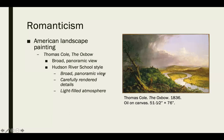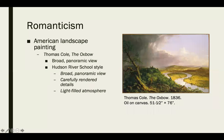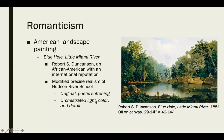Cole's 'The Oxbow' shows a broad panoramic view done in the Hudson River School style, which focuses on broad panoramic views, carefully rendered detail in the foreground, and a very light, atmospheric feel — very realistic, dramatic in color and lighting, but always beautiful. Robert S. Duncanson was an African-American artist with an international reputation who also worked in this style. His 'Blue Hole in the Little Miami River' has a more original, poetic softening with orchestrated light, color, and detail — it feels like a narrative is unfolding.